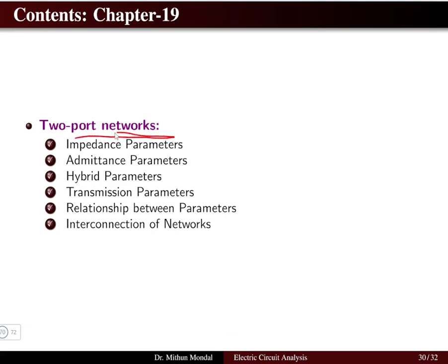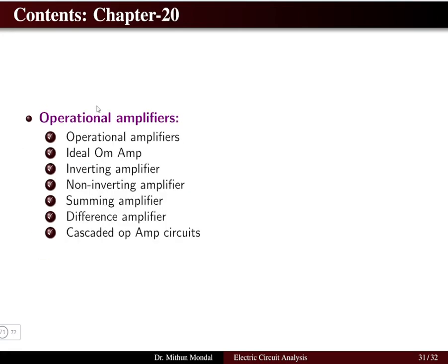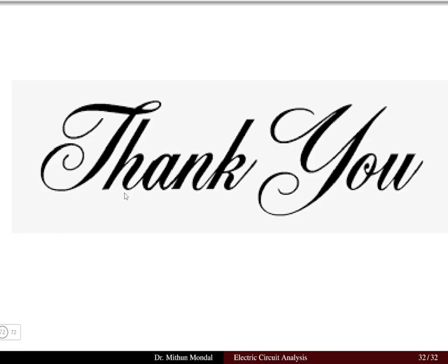Chapter 19 covers two-port networks, including impedance parameters, admittance parameters, hybrid parameters, transmission parameters, relations between parameters, and interconnections of different networks. Chapter 20, the final chapter, covers operational amplifiers: ideal op-amp, inverting, non-inverting, summing and difference amplifiers, and cascaded op-amp circuits. The entire electric circuit theory course covers 20 important chapters, each equally important. Students are encouraged to study this subject carefully.